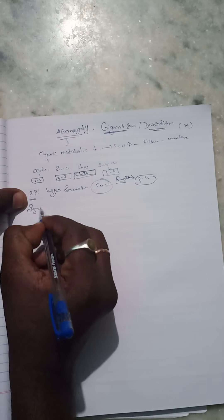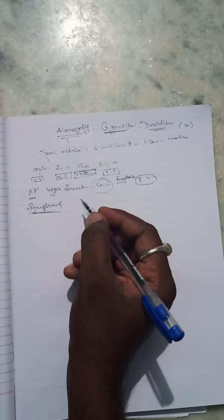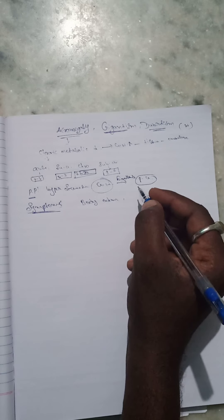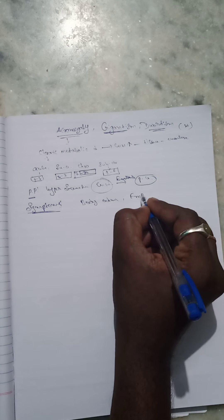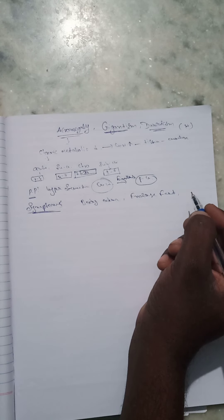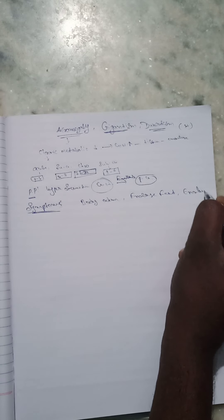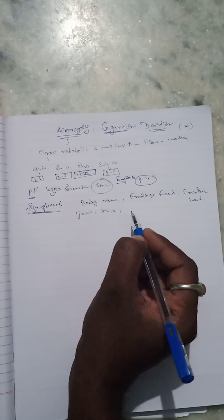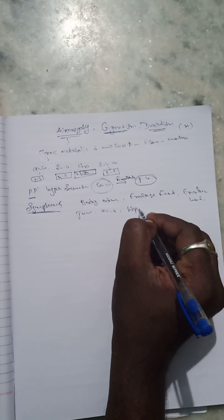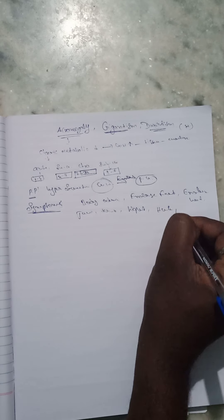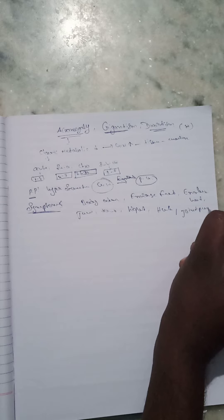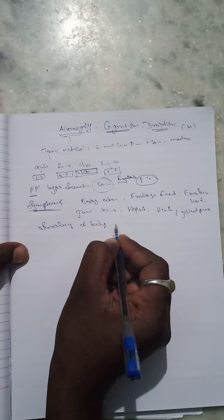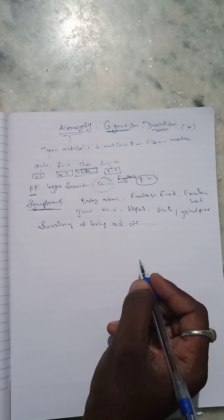What are the symptoms of acromegaly? The symptoms include body odor, enlarged feet, enlarged hands, enlarged jaw and tongue, excessive height, headache, joint pains, and swelling of body areas.